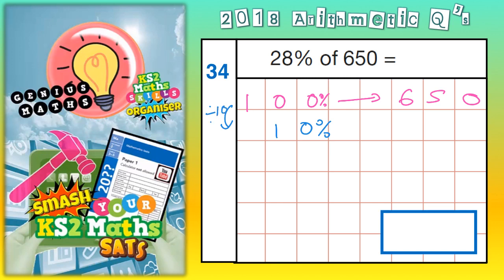100% divided by 10 is 10%. So, we need to divide the 650 by 10 as well. 650 divided by 10 is going to be 65.